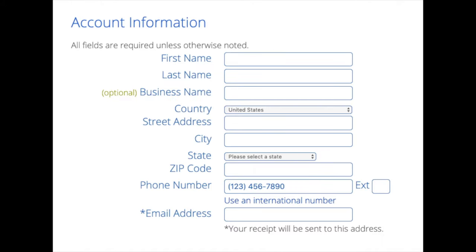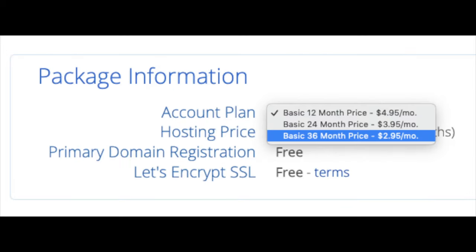You are now brought to a 'Create Your Account' page where you'll input your information: first name, last name, business name (optional), country and address information, phone number, and the best email address for you — as you'll get emailed a receipt of payment and a copy of your login credentials. Below that you will see package information with your account plan, where you can select a term for your hosting package: 12 months, 24 months, or 36 months. You'll save money the longer you purchase your hosting for.